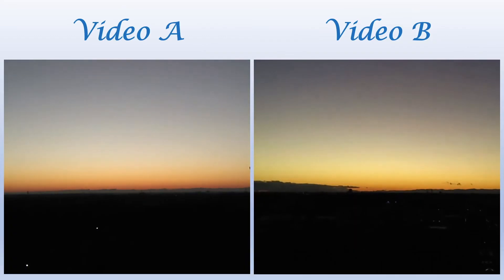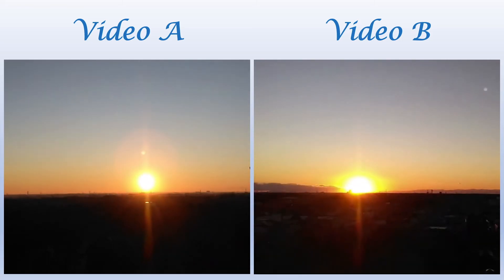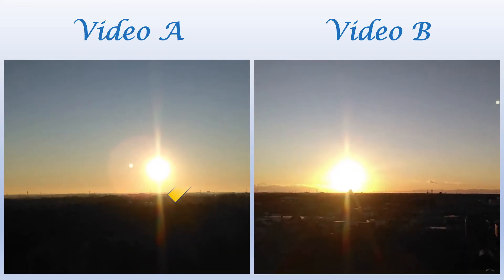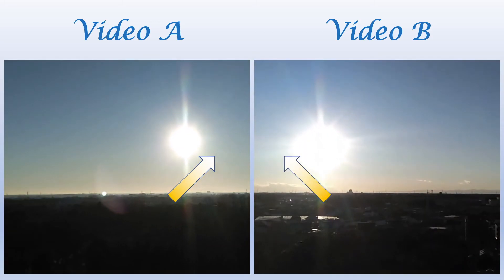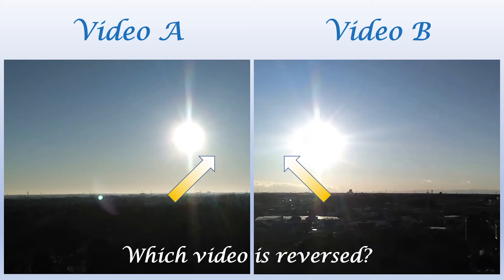Let's look at the videos again. You will notice that the direction of the movement of the sun is different. In video A, the sun moves to the top right, whereas in video B, the sun moves to the top left. Surely, the two videos cannot be both from sunrises at the same location.